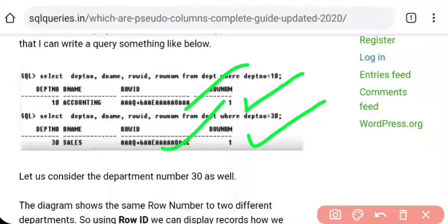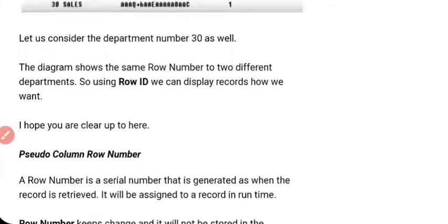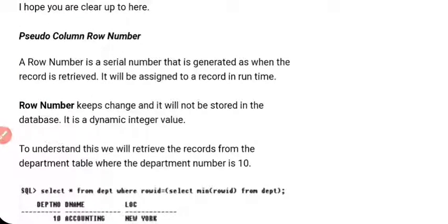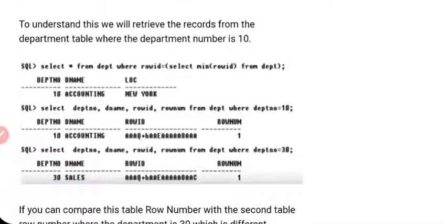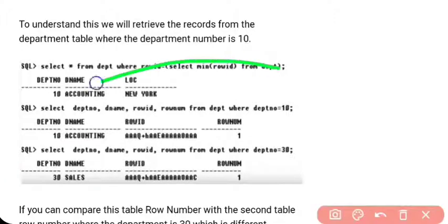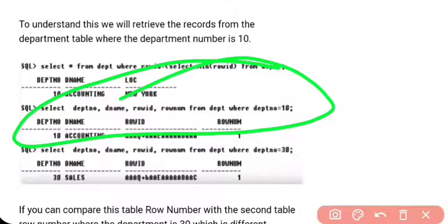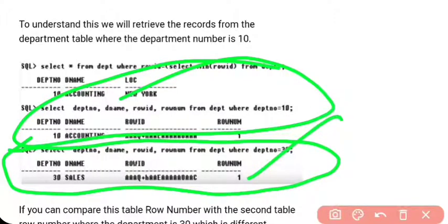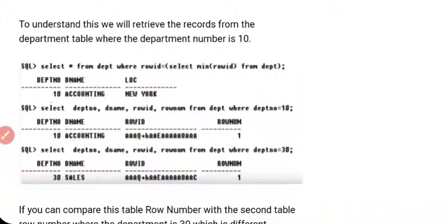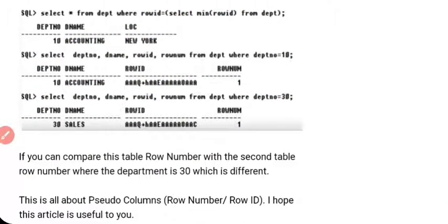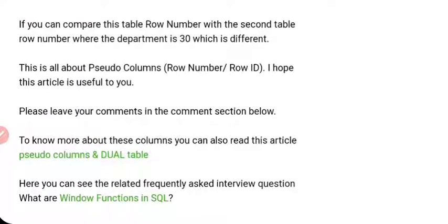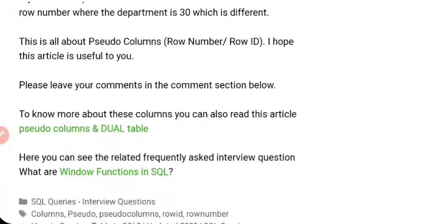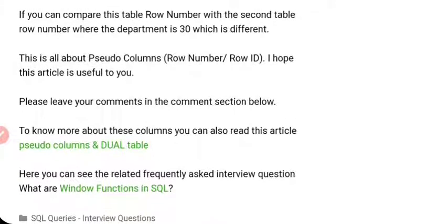Each time a record is inserted, it is stored on your database hard disk. As stated, the ROWNUM keeps changing — when you write SQL to find department number 30, ROWNUM is 1, and when you write SQL to find department number 10, you also get ROWNUM 1 because there is only one record each time. But if you observe the ROWID, it is different in each case. This is the major difference — I hope this explanation is useful for you.